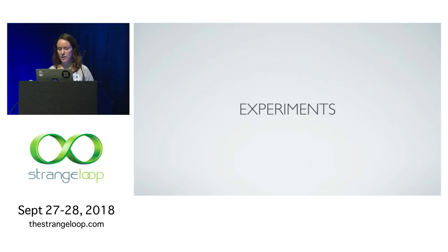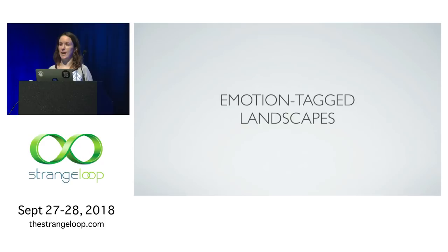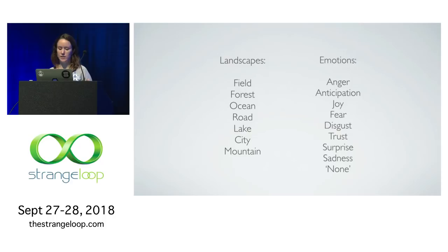I've started to do some experiments in this area. The first is a data set of emotion-tagged landscapes. There are seven sets of landscapes — fields, forests, oceans, roads, lakes, cities, and mountains — and then eight emotions: anger, anticipation, joy, fear, disgust, trust, surprise, sadness, and also none.